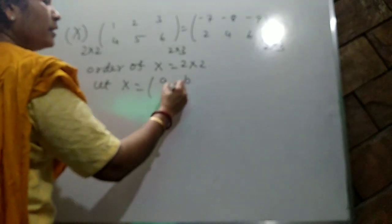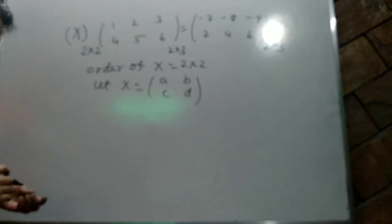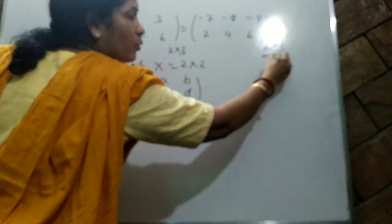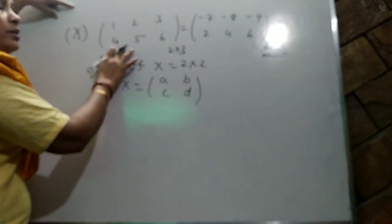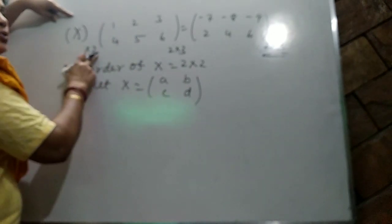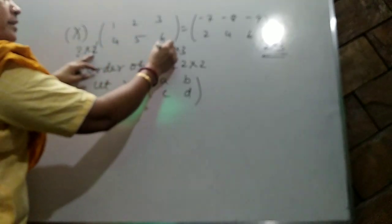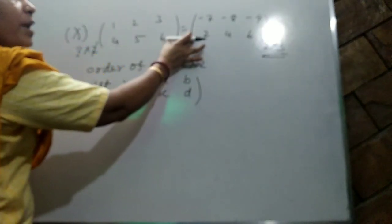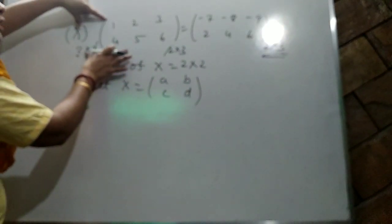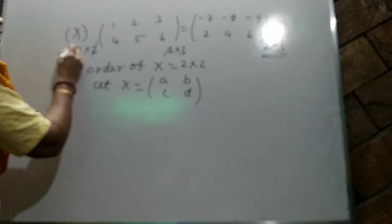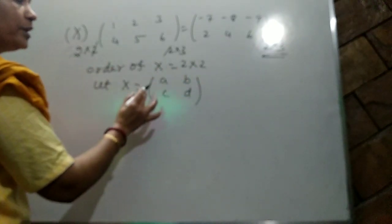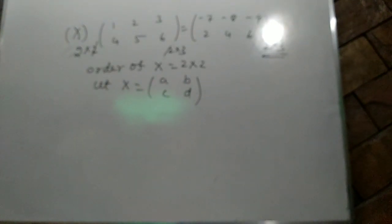Let X equal [A,B; C,D] (2×2). Only when the number of columns of the first matrix equals the number of rows of the second matrix can we multiply. After multiplication we get a 2×3 matrix, matching the right-hand side, since equal matrices must have the same order. That is why the order of X must be 2×2.